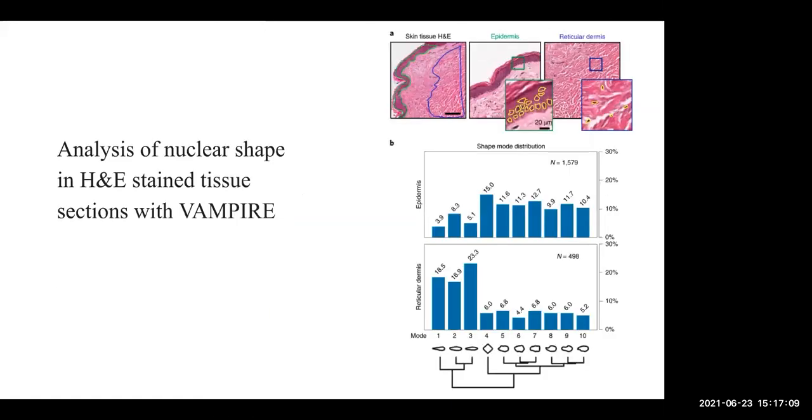Then they show another example here where the nuclei in the epidermis and the reticular dermis regions of the skin tissue are shown. And you can see these are the final shape modes that they extracted from these data. And you can see how different the morphology of the cells between these two layers look like.